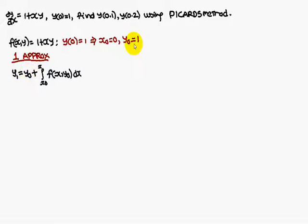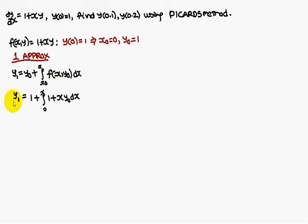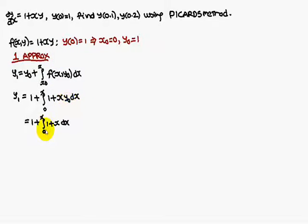For the formula, y0 value is 1, x0 is 0. f(x, y0) means in place of y, replace y with y0. Therefore, y1 is equal to 1 plus the integral from 0 to x of 1 plus x·y0 dx, where y0 is 1.